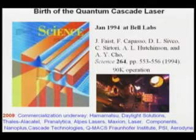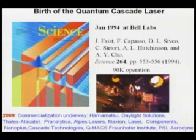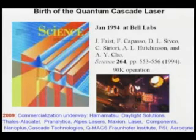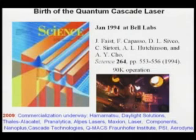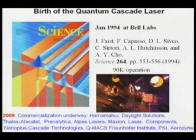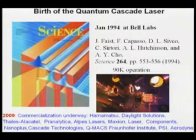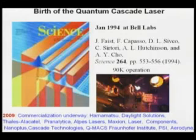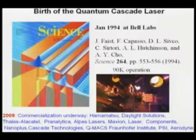Our first paper in Science was in 1994, and initially the device operated only at 90 Kelvin. The progress has been much faster than we could possibly dream — you can never predict what technology is actually going to do; technology is far less predictable than science because there are so many other factors that come in. Now in 2009, commercialization is very strong. There are large companies involved, such as Hamamatsu, a partnership between Thales and Alcatel, and a whole list of companies growing almost by the year.